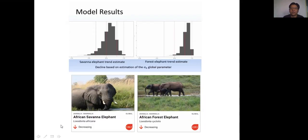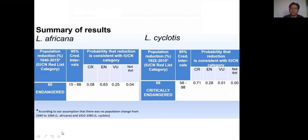We can see the model results for savannah elephants and forest elephants. The higher probability indicates that the forest elephant should be classified as Critically Endangered and the savannah elephants should be classified as Endangered.